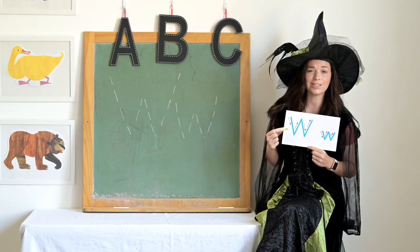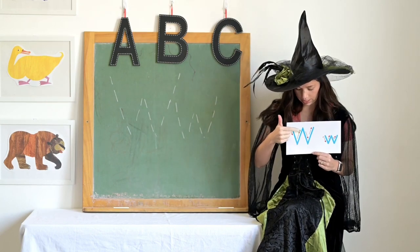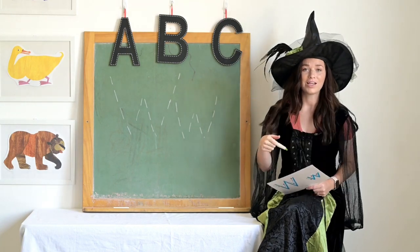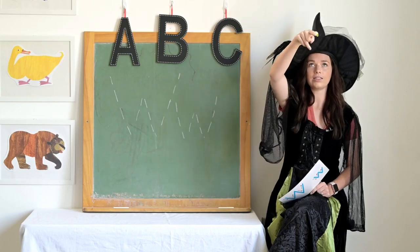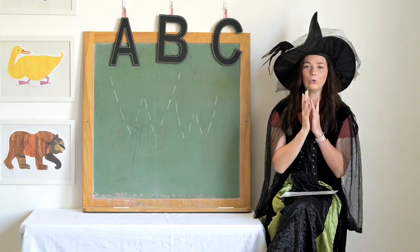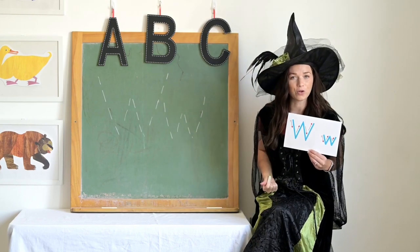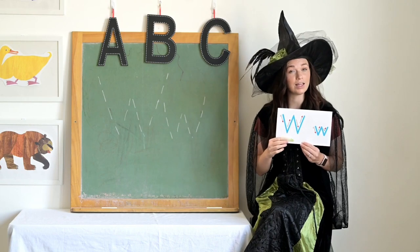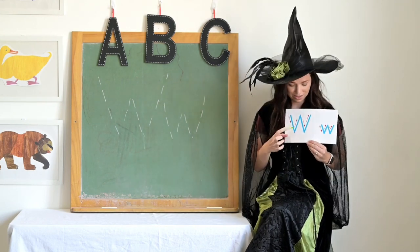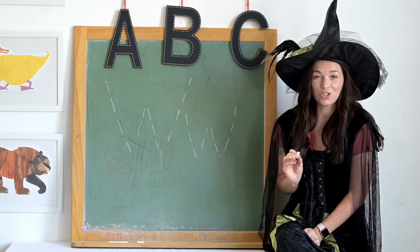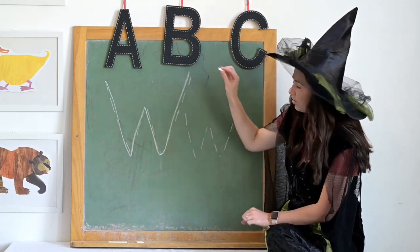This is the letter W. When we trace the W, we do it like this: slant down, slant up, slant down, slant up. Now place your witchy fingers in the air and trace it with me: slant down, slant up, slant down, slant up. Very good. What are the letter features in W? That's right — there are four slanted lines in the letter W: slant down, slant up, slant down, slant up. Big W. Slant down, slant up, slant down, slant up — and that is a little W.